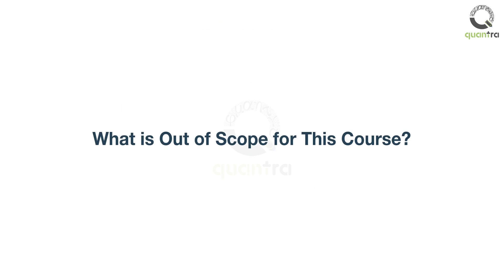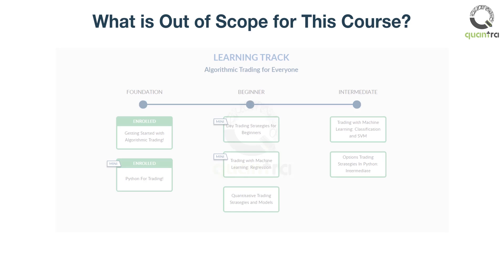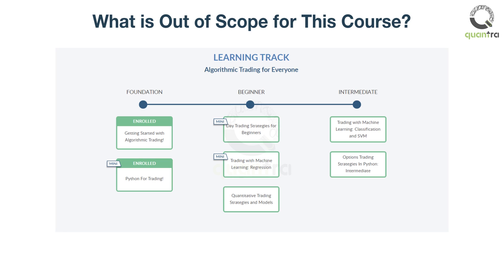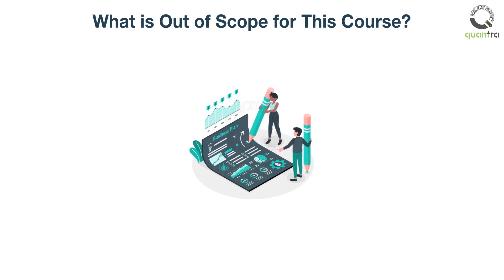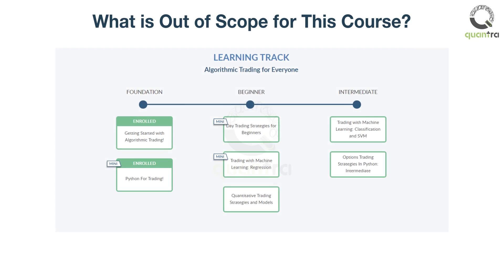What is out of scope for this course? This is an introductory course which will get you started in your journey to become an algorithmic trader. It is a fundamental course, part of the learning track Algorithmic Trading for Everyone. It will provide a bird's eye view of various important topics in algorithmic trading and quantitative analysis. Actual implementation of algorithmic trading in live markets is out of scope; to implement the concepts introduced here, you would need to complete the entire learning track.